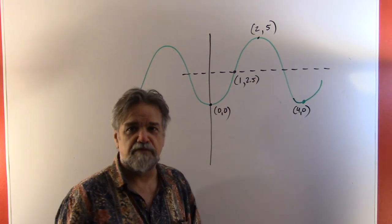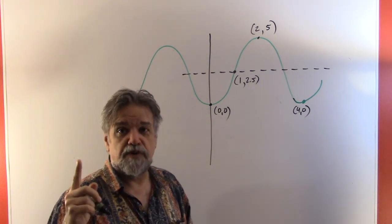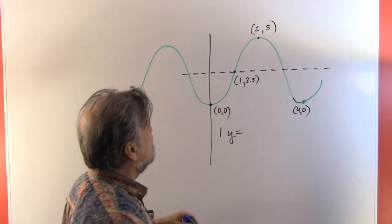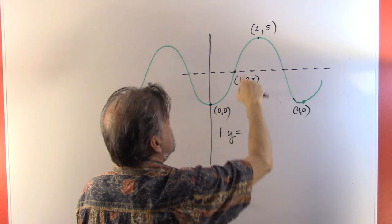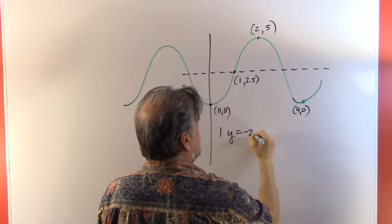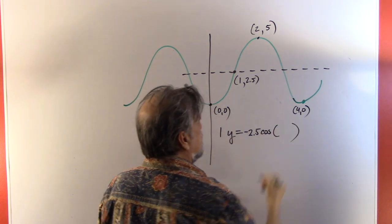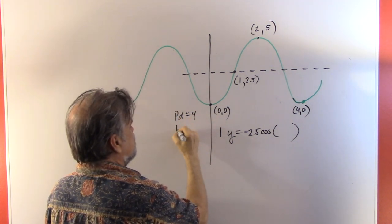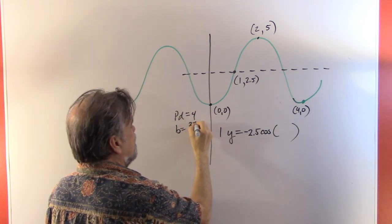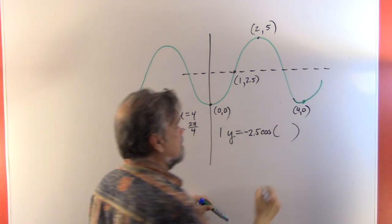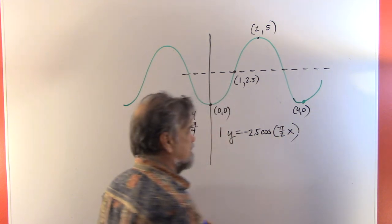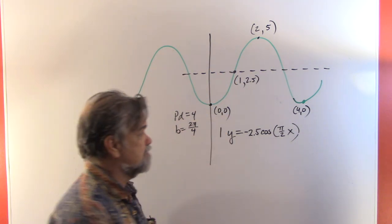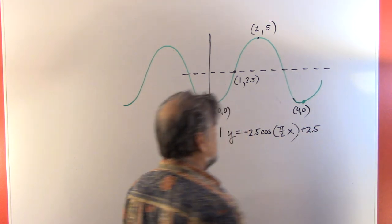Now we can write our equation. y equals negative 2.5 times the cosine of (π/2)x plus 2.5. The amplitude is 2.5, it's a negative cosine, the period is 4 so parameter b = 2π/4 = π/2, and the midline is at y = 2.5 giving a vertical shift of +2.5.